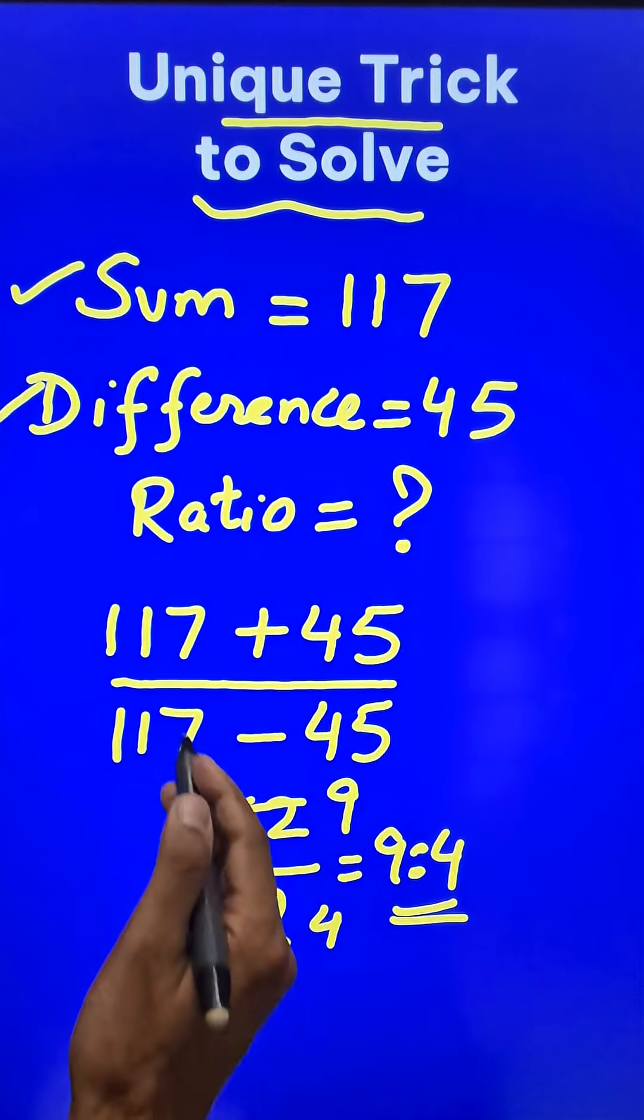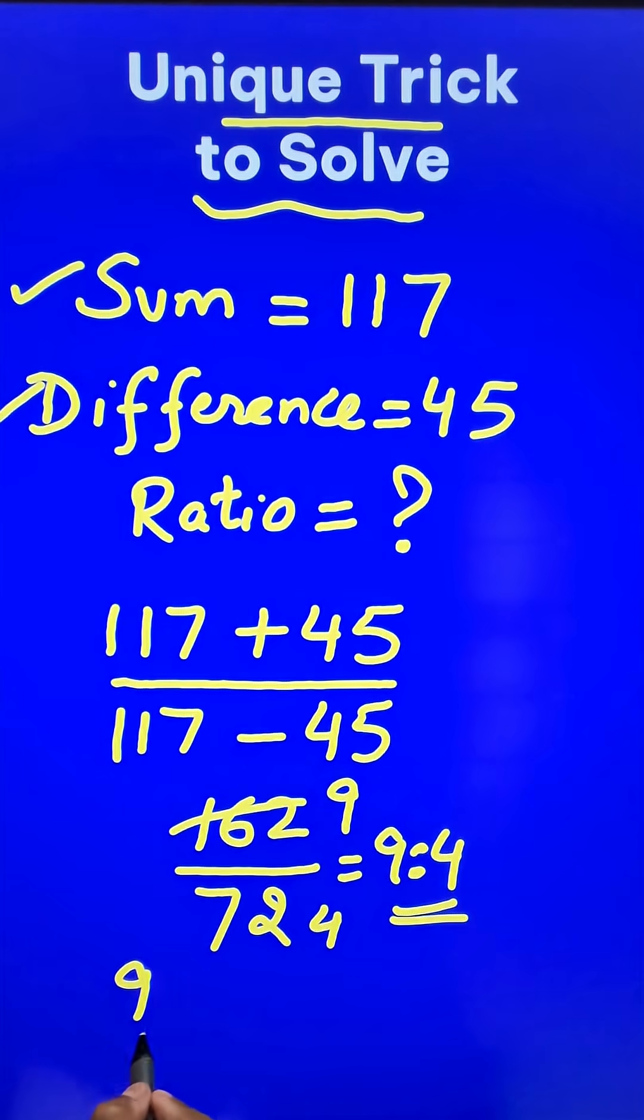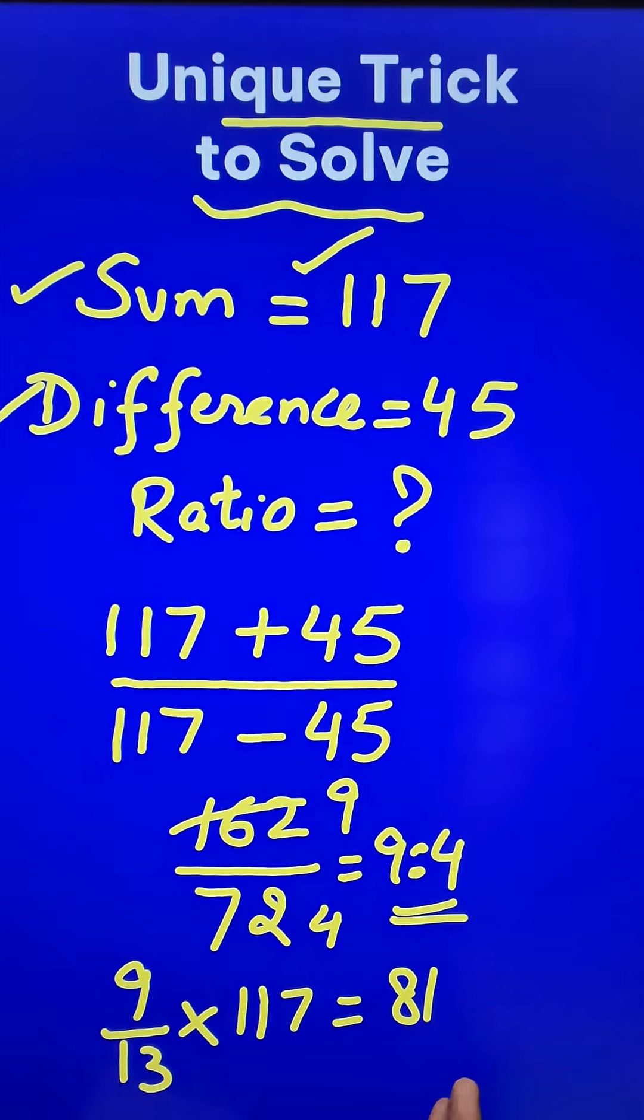Now if you want to find the individual numbers, 9 ratio 4 means 9 upon 9 plus 4, 13 of the sum that is 117. You will get the first number 81 and similarly you can find the second number by taking 4 out of 13 of 117.